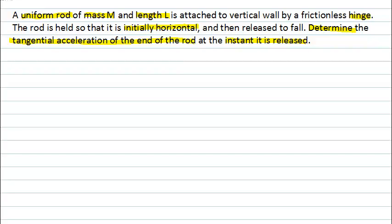As with most problems, a very good way to start is to draw a diagram of the situation. So here's our vertical wall, and here's a hinge with our initially horizontal rod attached. The question tells us that our rod has a length capital L. So there it is there.